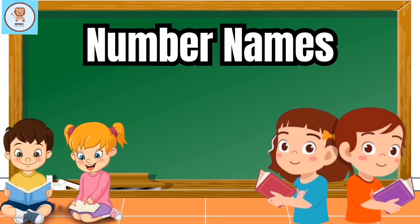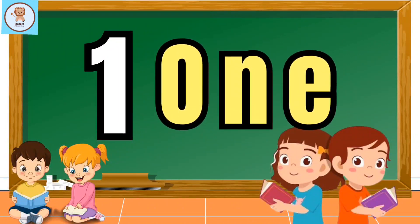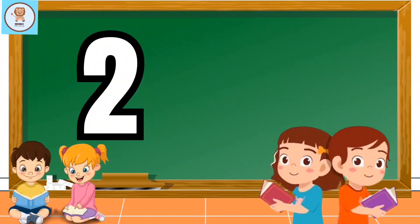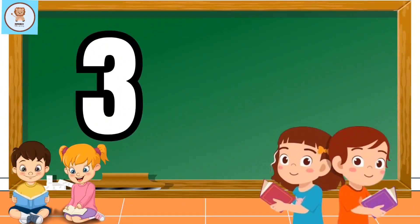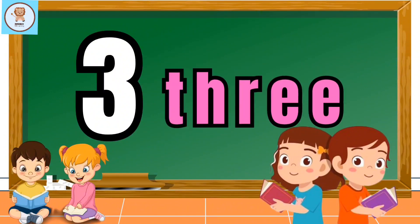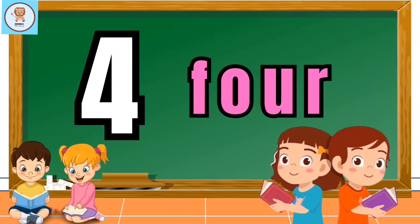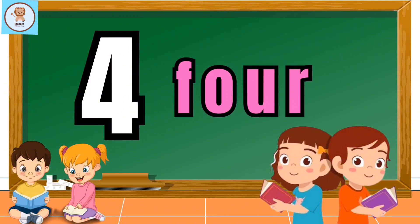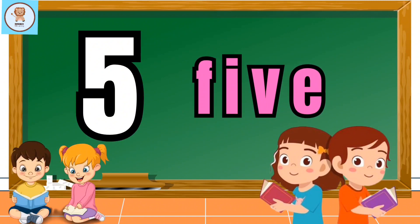Number Names From 1 to 10. Number 1, O-N-E, 1. Number 2, T-W-O, 2. Number 3, T-H-R-E-E, 3. Number 4, F-O-U-R, 4. Number 5, F-I-V-E, 5.